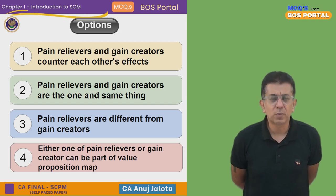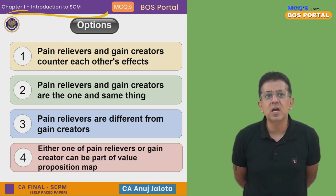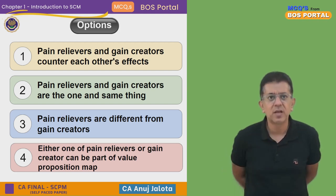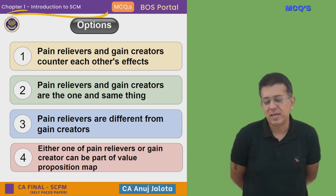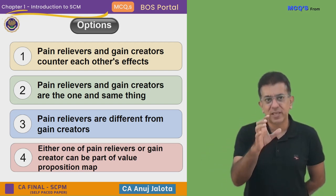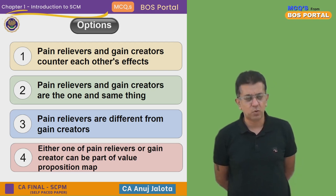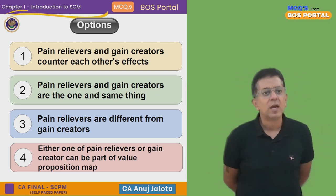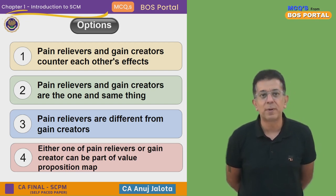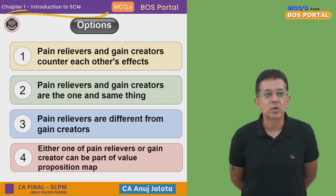Coming back to the question — pain relievers and gain creators counter each other's effects? No, they are two different things; they don't counter each other. Pain relievers and gain creators are one and the same thing? No, they are not the same, although one feature might help you do both. Pain relievers are different from gain creators — that's what I'm saying, so option three is the correct one. Option four says either one can be part of the Value Proposition Map, but of course both are part of it.